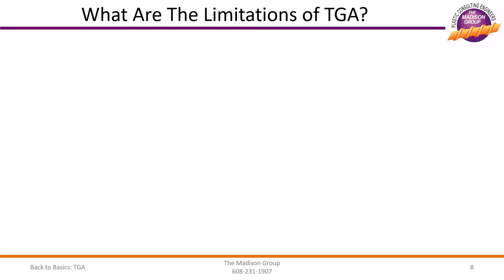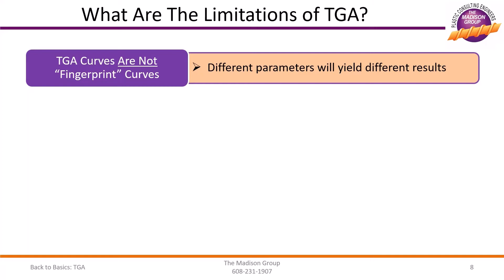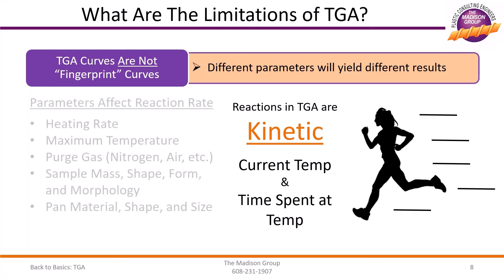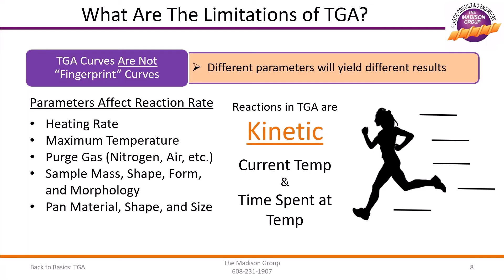While TGA is a very powerful technique to quantify the parts of a material, there are some limitations that should be addressed. Primarily, it should be understood that TGA curves are not fingerprint curves. When run with different parameters, the general shape of the curves will change because the events that occur in the TGA are kinetic in nature — highly dependent on the current temperature and the time spent at that temperature. Any parameter that changes the reaction rate will affect the general shape and temperatures at which those reactions occur. These parameters include heating rate and maximum temperature achieved, the purge gas or atmosphere of the furnace, the sample mass, shape, form, and morphology, as well as the pan material, shape, and size.